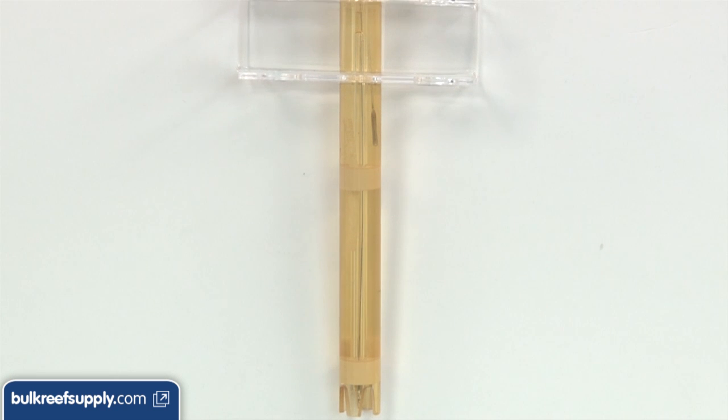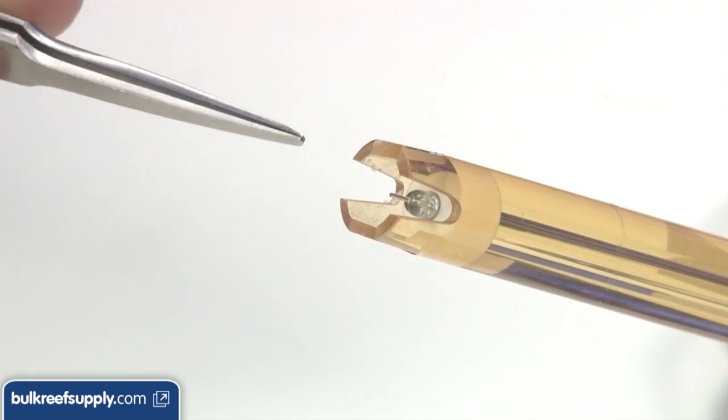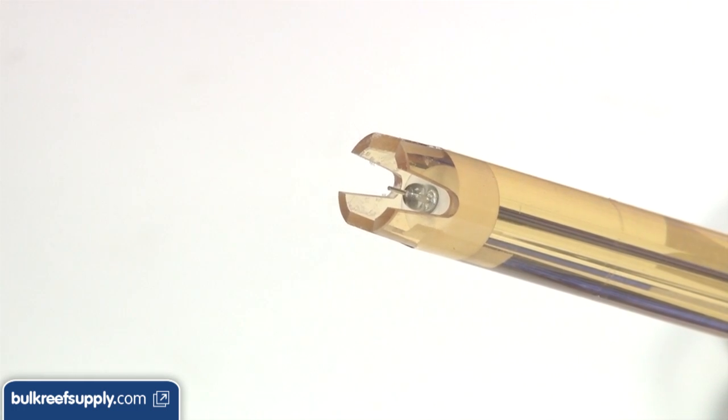One thing worth noting on the ORP probe specifically is the use of high grade platinum rod on the ORP electrodes. Many of the other ORP probes are using either plated rod or lower quality platinum.